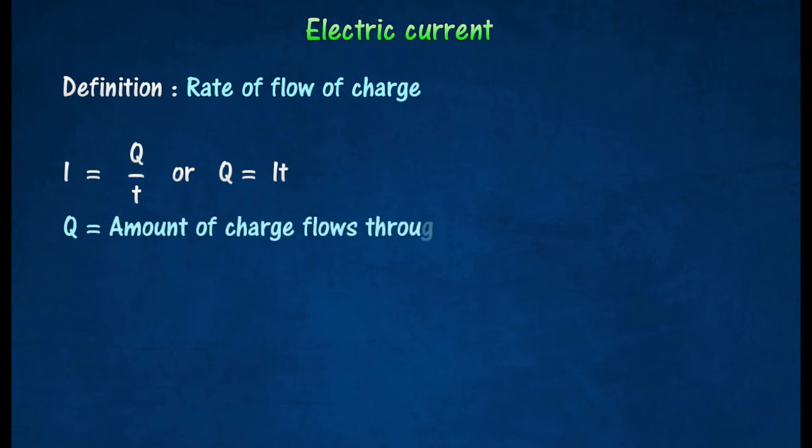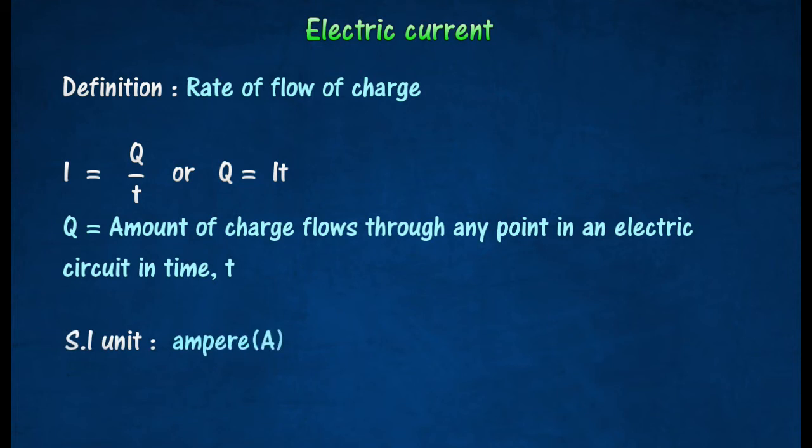In an electric circuit in time T, the SI unit of electric current is the ampere. The electric current flowing in an electric circuit is one ampere if the amount of charge flowing through any point in the circuit in one second is one coulomb.